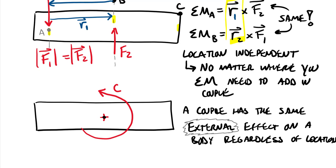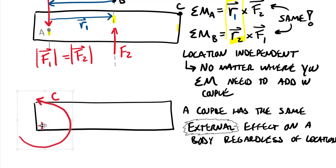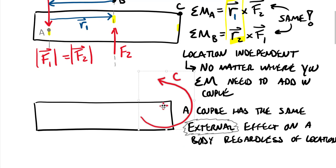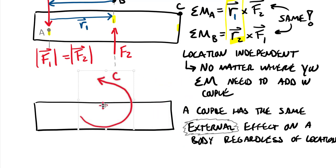In statics we spend most of our time looking at rigid bodies — we only care about the external behavior of this non-breaking, completely rigid body. While we can move this couple around without changing the external effects on the body, it would actually change the internal loading. Some internal factors we'll get into later include shear, moment, and axial load. Moving the couple changes the distributed level of forces inside the material, but externally, assuming a rigid body, we're good.